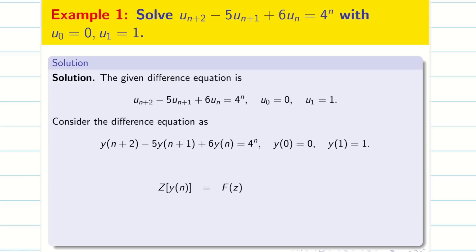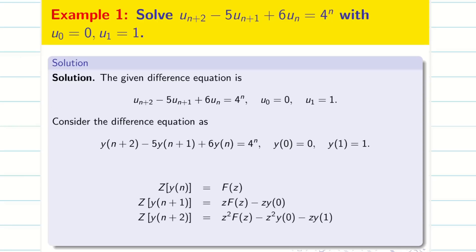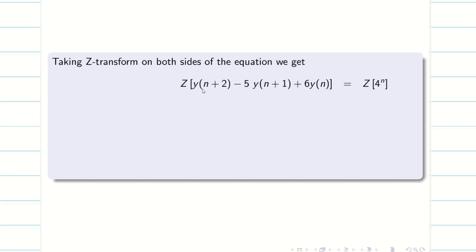Let us write the formulas one by one. This is the very important assumption: Z of y(n) is F(Z). Then Z of y(n+1) is Z·F(Z) minus Z·y(0). Similarly, Z of y(n+2) is Z²·F(Z) minus Z²·y(0) minus Z·y(1). Now take this equation as equation 1 and apply Z-transform on both sides.